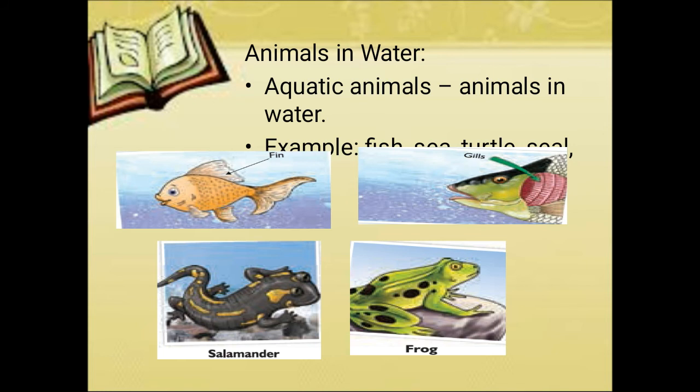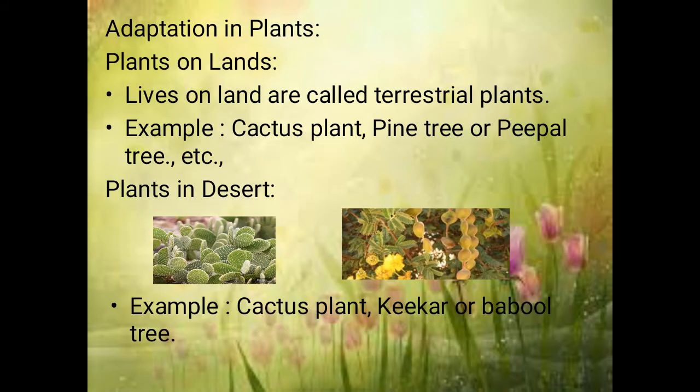Animals in water are known as aquatic animals, and animals living both on land and in water are known as amphibians. For aquatic animals, a specially named organ called gills helps them to breathe easily — it extracts oxygen from the water — and they have fins and a tail which help them move in different directions. For amphibians, as they can live both on land and in water: while on land, they use lungs for breathing, and while in water, they use their skin for breathing.